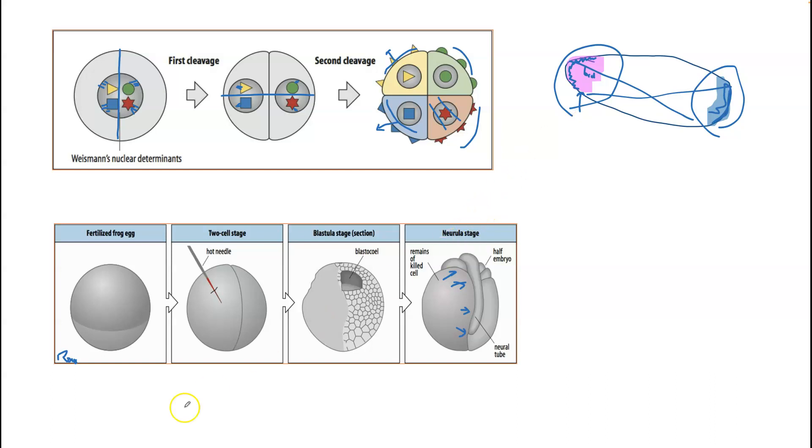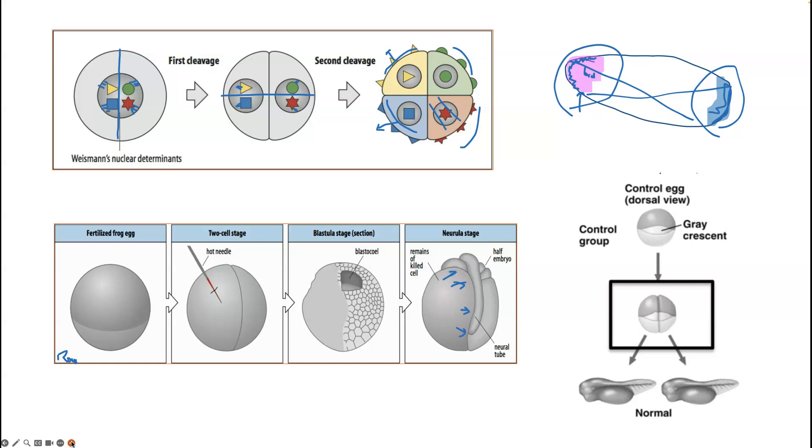Just for your interest, Spemann—famous Spemann of the Spemann organizer—did work with frog embryos later on in development. He used a little hair, a very fine hair, and he used it to surround and pinch off and separate the two single cells that form after the first division of a frog embryo.